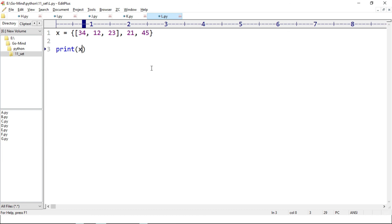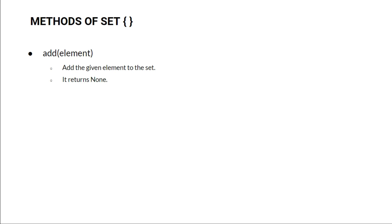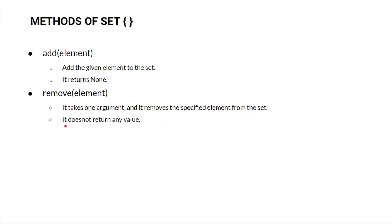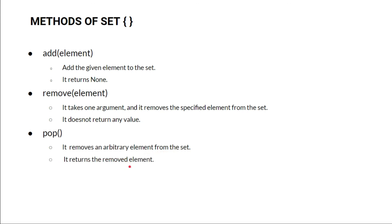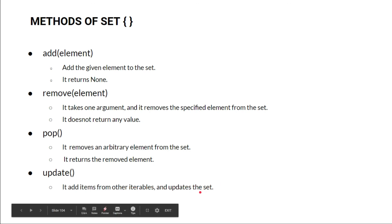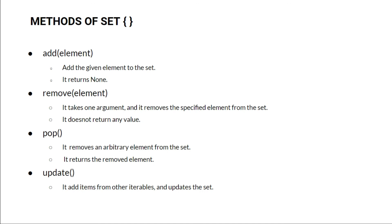Let's recap. The first method was add — it adds a given element to the set and returns None. Remove takes one argument and removes the specified element, returning no value. Pop removes an arbitrary element and returns the removed element. Update adds items from other iterables and updates the set. That was all for today — we'll see more methods in the next lecture. Bye bye.